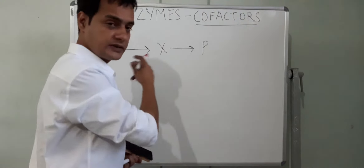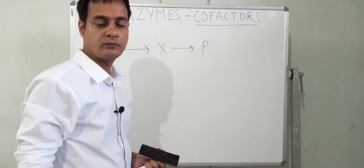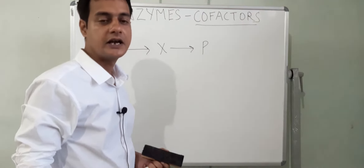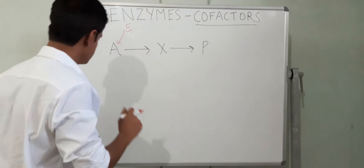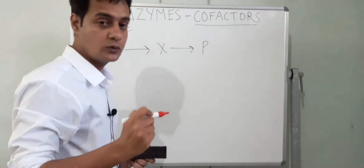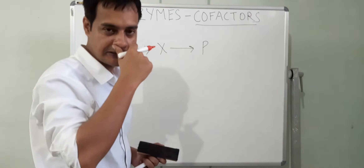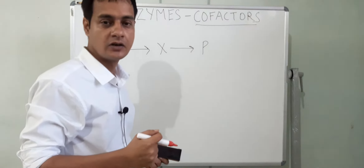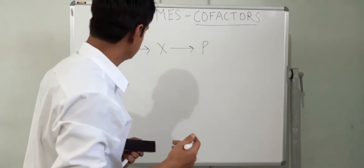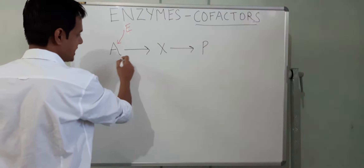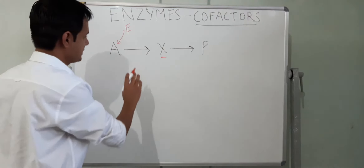How does an enzyme act on the substrate? Enzymes are made of proteins, and proteins are made of amino acids. Amino acids have functional groups, and these functional groups interact with the substrate — through charge-to-charge interactions, acid-base catalysis, or transient covalent bond formation.